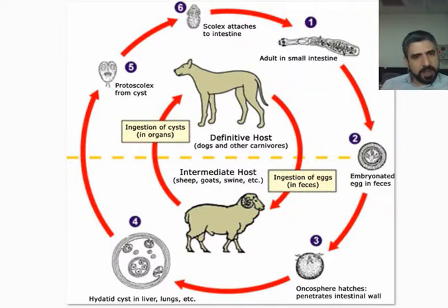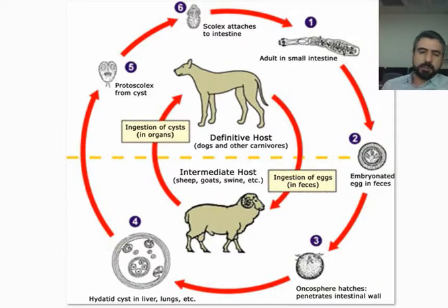It can happen anywhere, including the brain, kidney, spleen, peritoneum, and all other areas.